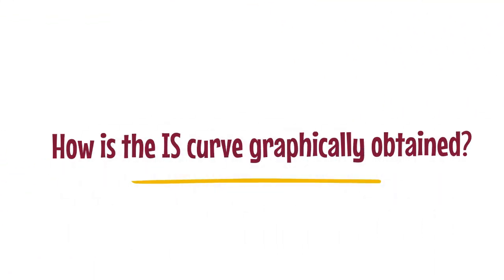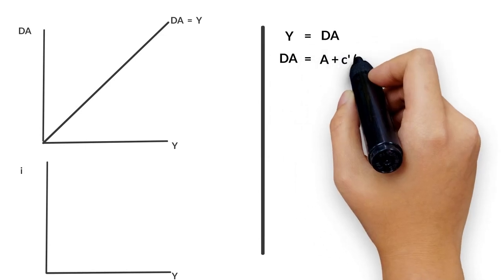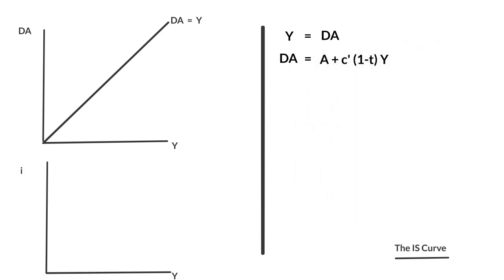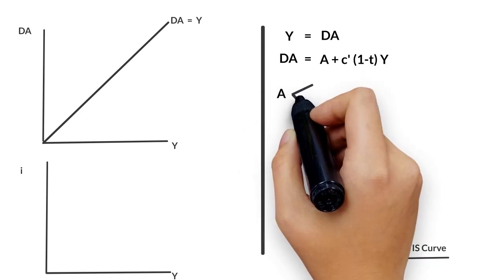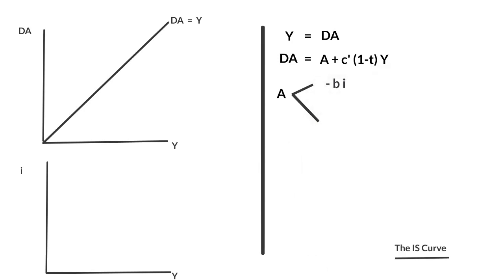The IS Curve is graphically obtained upon two equilibrium points in the market of goods, determined by the income-expenditure model. The aggregate demand is equal to A plus the marginal propensity to consume times (1 minus T) times the level of income.